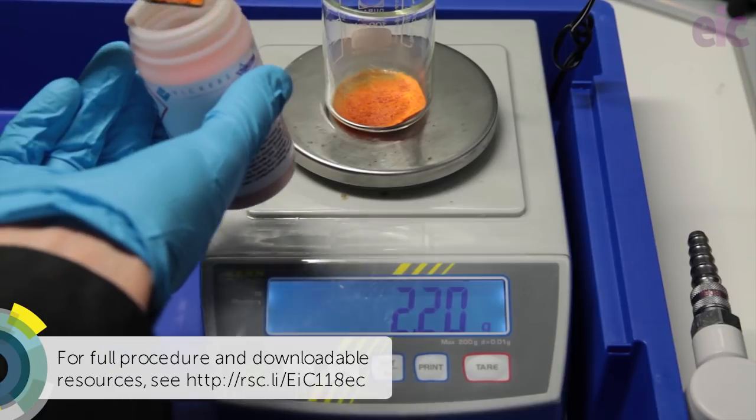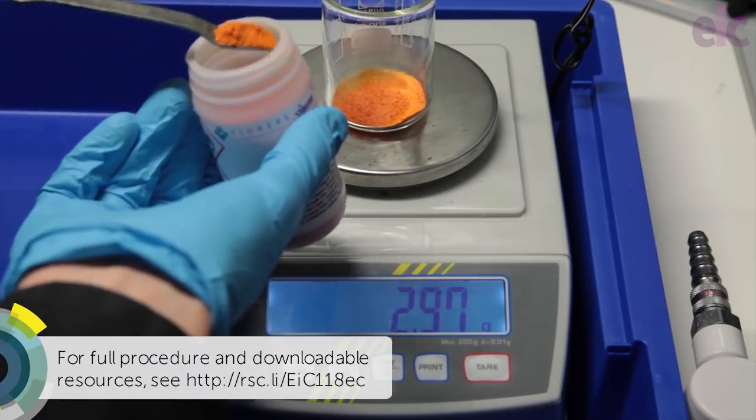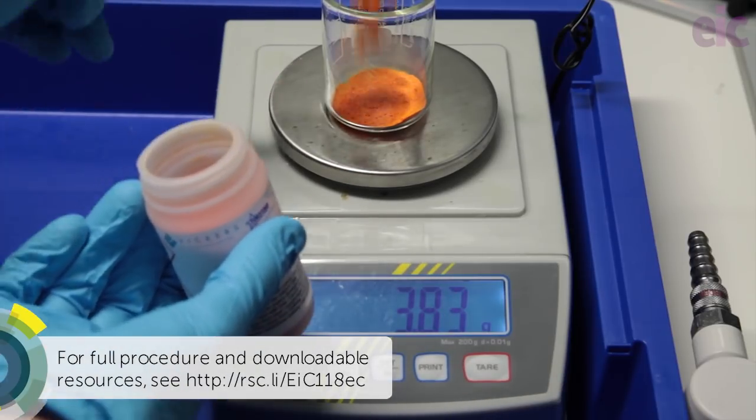I'm working in a fume cupboard for the setup, and I'm sticking with the recommended 5 grams of dichromate. Don't be tempted to scale up.